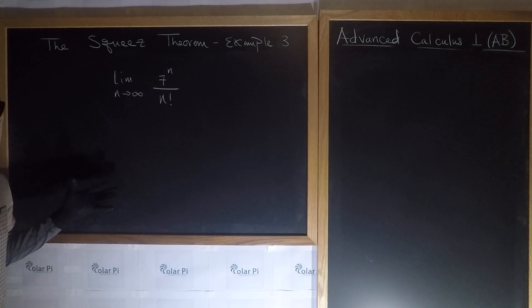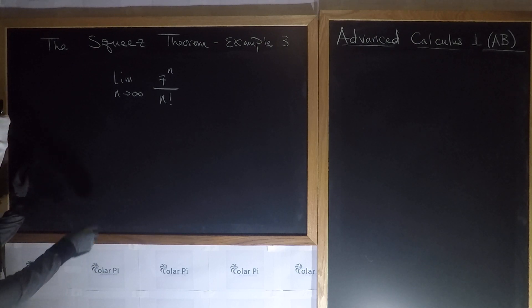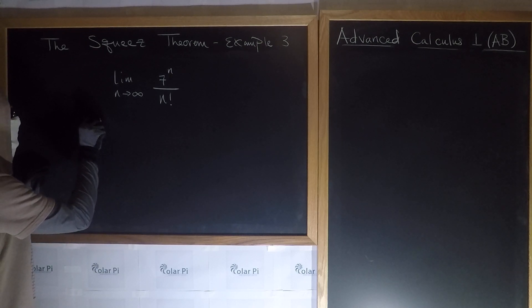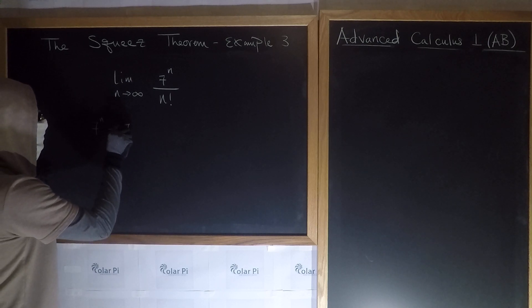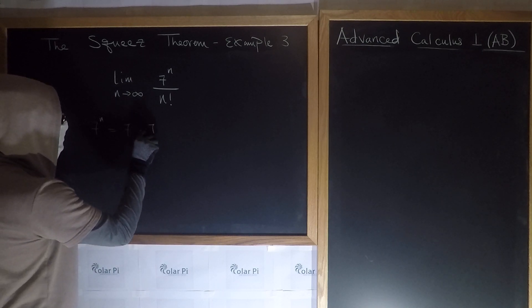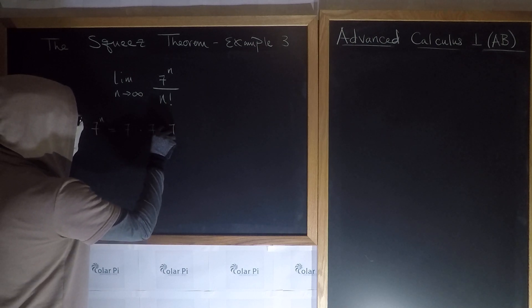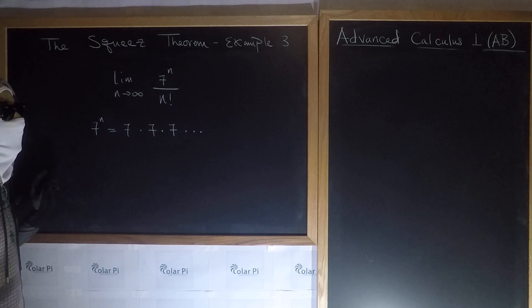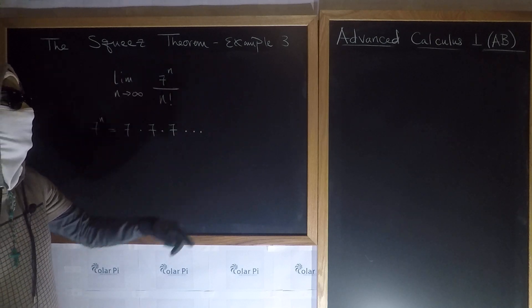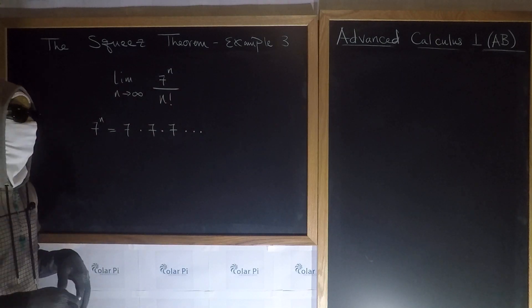However you think about this, you cannot depart from the following line of thinking, which is that 7 to the n is n 7s in a product. So that's like 7 times 7 times 7. I'm not going to write too many 7s, don't worry. But I will intentionally write 7 7s after this, because it will help a lot of you understand this.